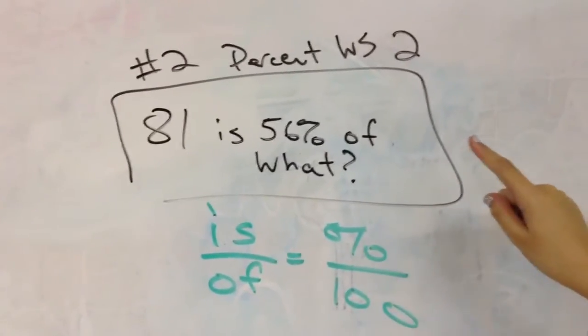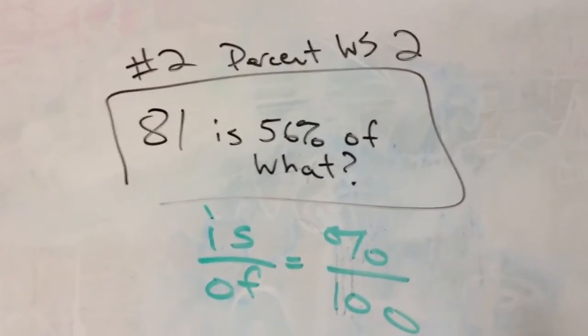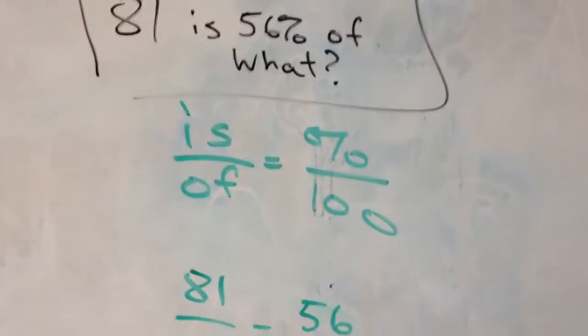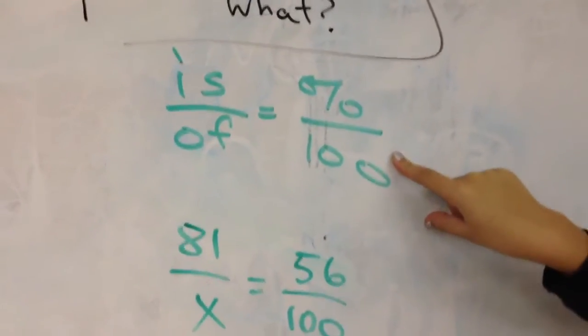First we're going to, the question states, 81 is 56% of what? So we can use this setup to help.